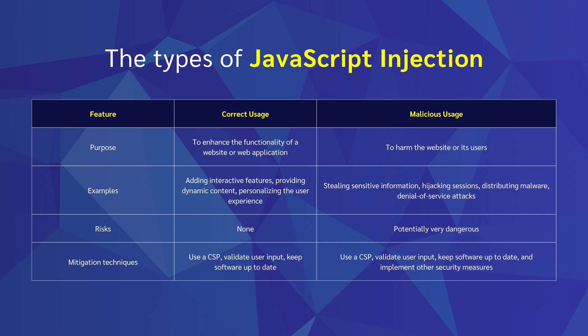The malicious usage of JavaScript injection is to inject malicious code into a website's JavaScript with the intent of harming the website or its users. Malicious JavaScript injection attacks can be very dangerous and have a significant impact on security. Cross-site scripting or XSS is the most common type, occurring when an attacker injects malicious code into a website's input fields such as comment boxes or search forms, and the code executes in the victim's browser.